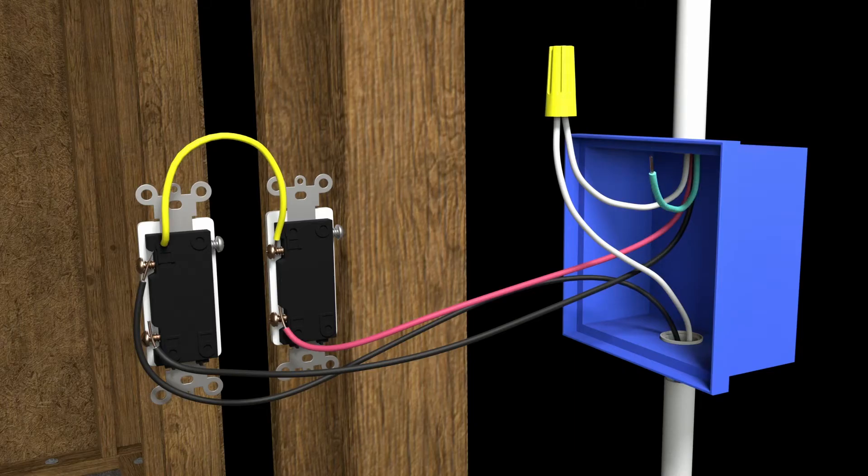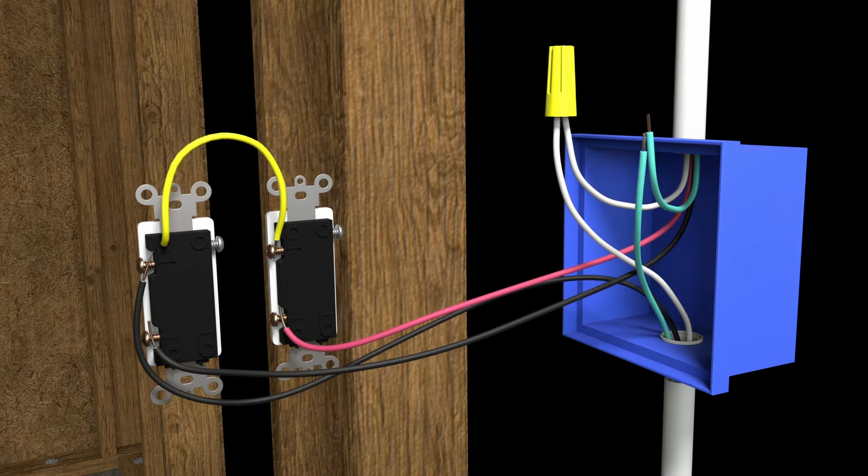The ground wire is brought to the wall switch and continues up to the ground lead in the fan's electrical box.